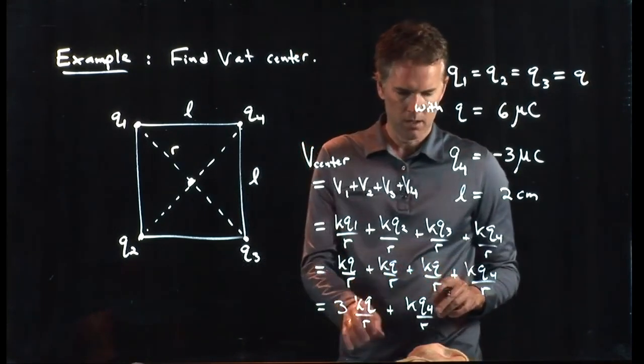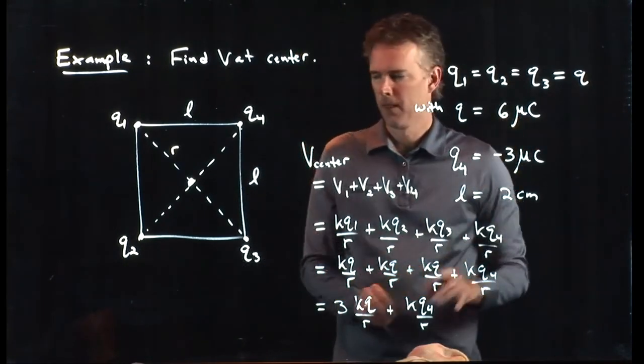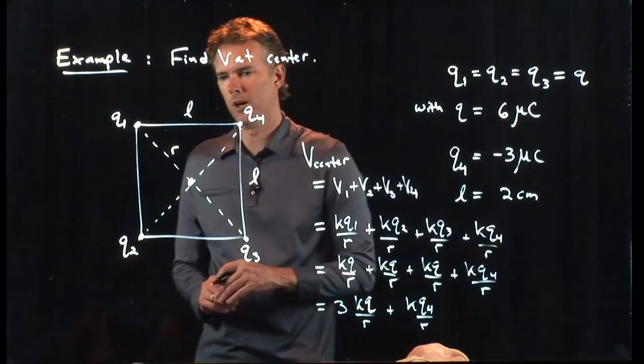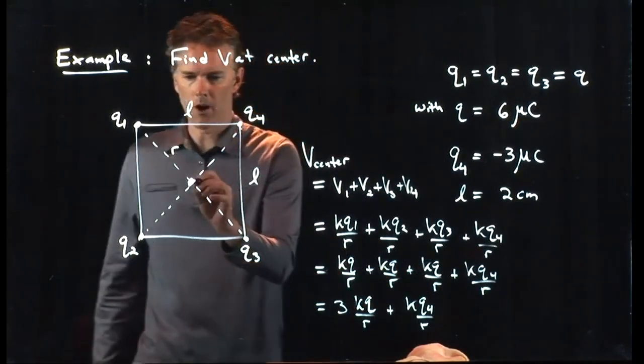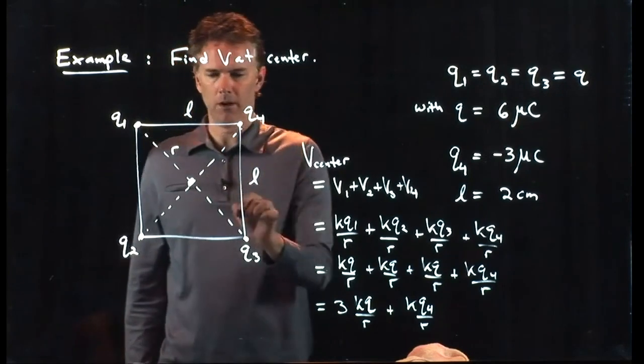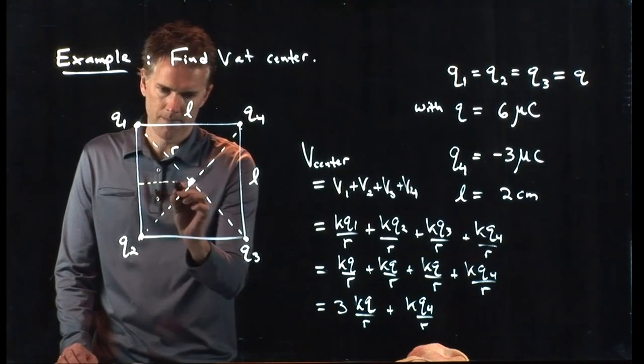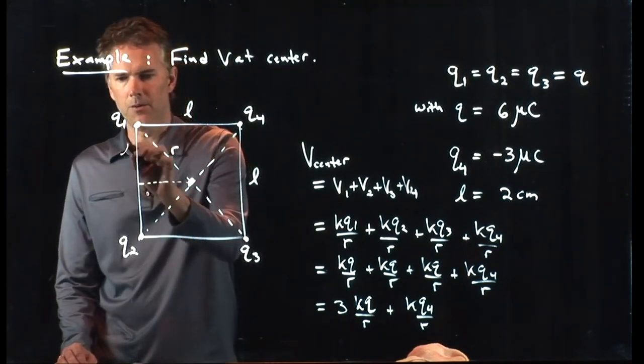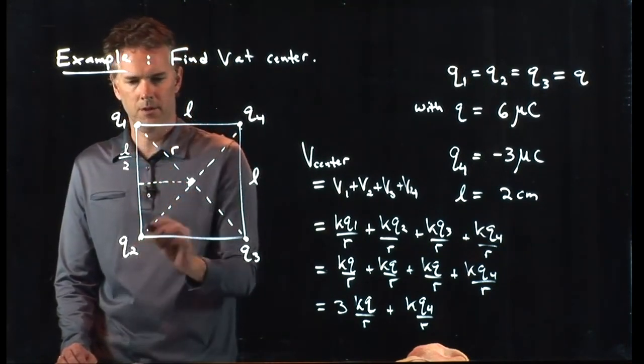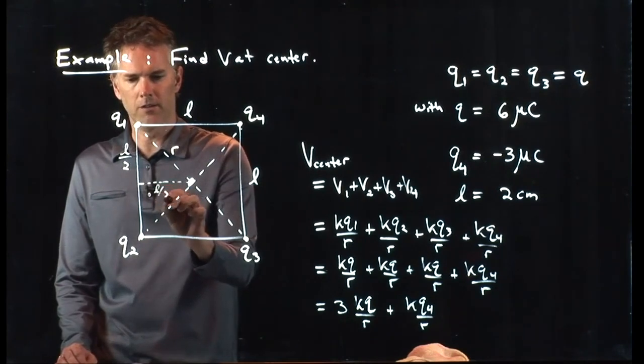We know K, we know the Qs, we need to figure out R. What is R? R is the distance from the center to any one of these edges. If I think about a triangle right here, this side of the triangle is L over 2, this side of the triangle is L over 2.